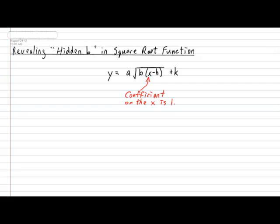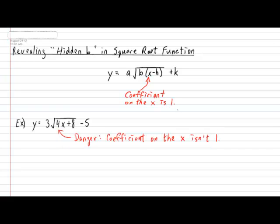So the next question that comes to your mind should be: what would the rule look like if it was not written in proper format? Well, here's a nice simple example. We have Y equals 3 multiplied by the square root of 4X plus 8, and minus 5. You should notice immediately that this is not written in proper format because the coefficient in front of the X is not a 1 — in this example, it's a 4.